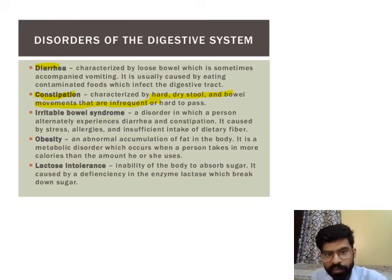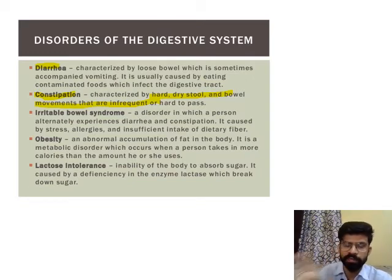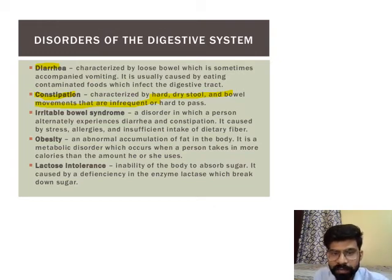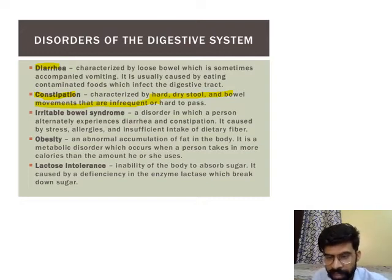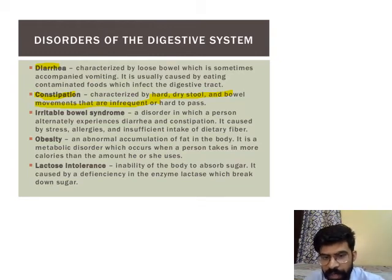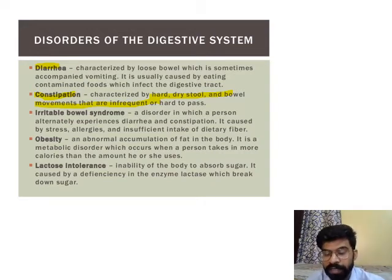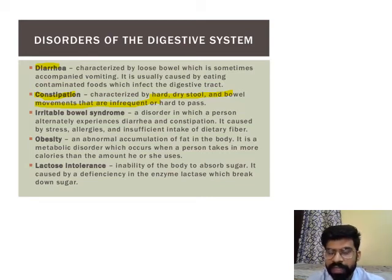The next disorder is irritable bowel syndrome. This occurs when a person frequently suffers from alternating diarrhea and constipation. This creates irritation in the lower area where undigested food is stored and passed out. Persistent irritation in that region is known as irritable bowel syndrome.